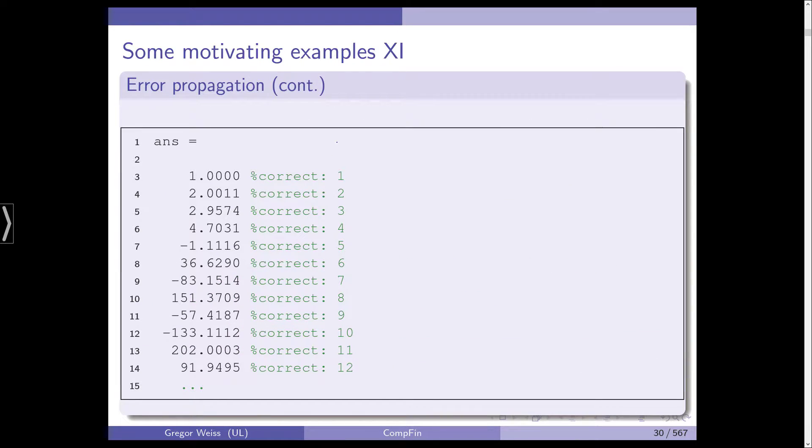Well, we are expecting 1, 2, 3, 4, 5, until 20. And what we get is 1, 2.0011, 2.9574, and you can go through. And if we just have a look at line 10, we were expecting 8, and we get 151. So, the result is woefully inaccurate. It's completely off.